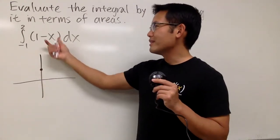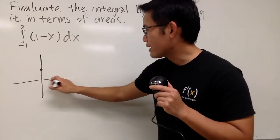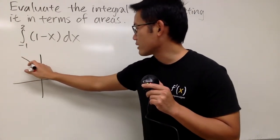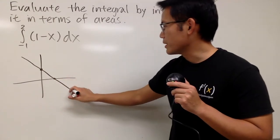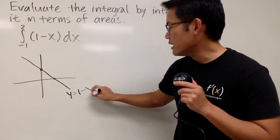And when x is equal to 1, of course that will be 0, so we have this right here. So you can connect the dots, and it's just going to be a straight line. So this is the equation y equals 1 minus x.